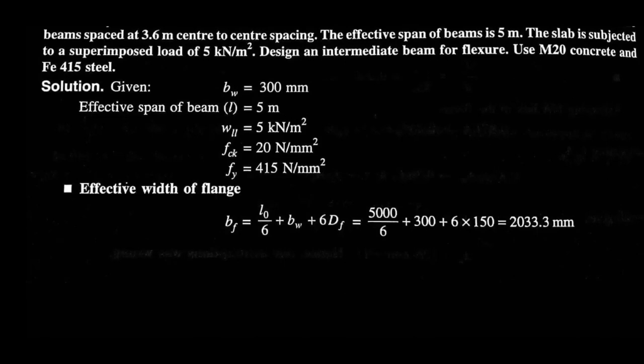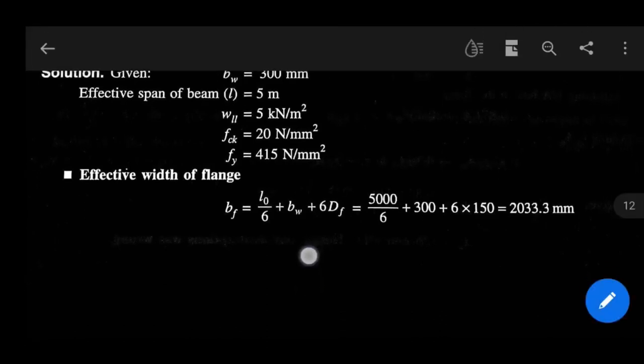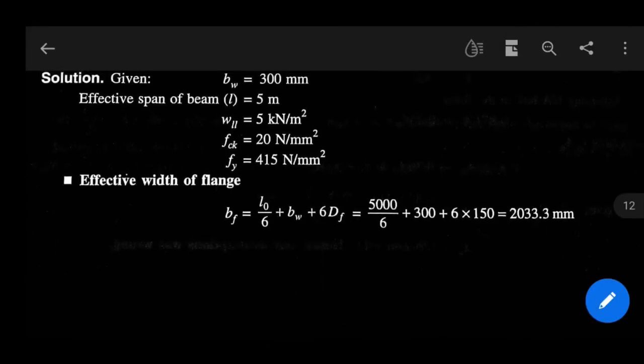For effective width of flange, as per IS 456:2000, we have to use this formula: BF equals L0 by 6 plus BW plus 6 DF, which equals 5000 by 6 plus 300 plus 6 into 150. That equals 2033.3 mm.